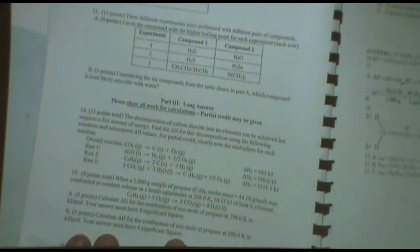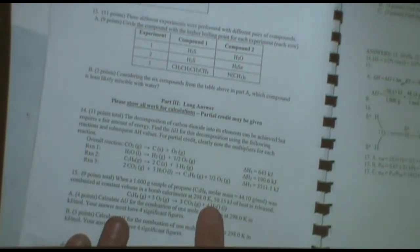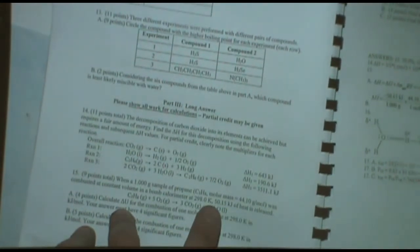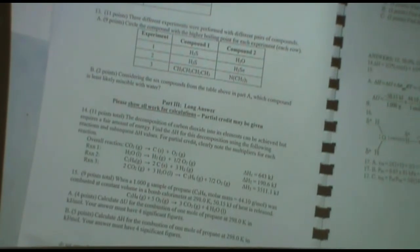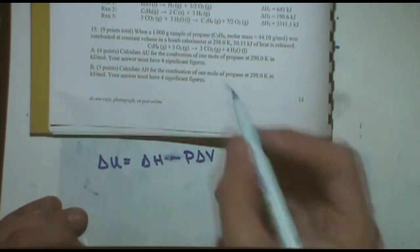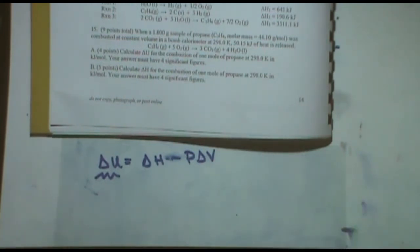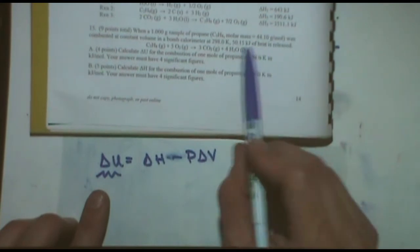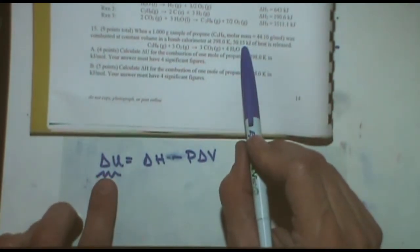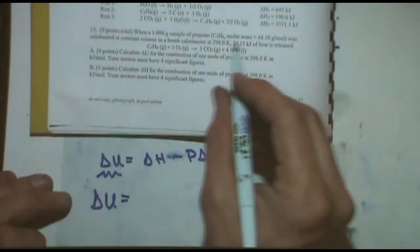The delta U is just this number but converted. When you see a delta U and a delta H, basically what I'm saying is the work term plays some role in the equation. Delta U is delta H minus P delta V. The energy that we give you is really that. These are usually equal when the work term is small, but when I'm asking for both, I'm implying that the work term is significant. Technically, this value that we give you is delta U right there.